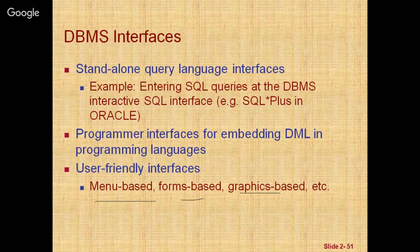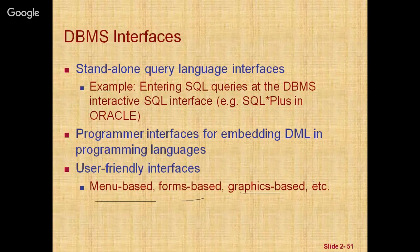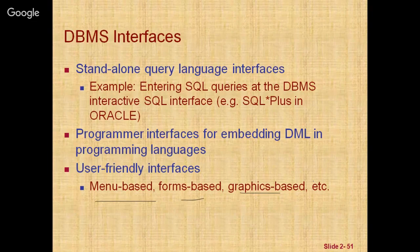Interfaces for parametric users — such as bank clerks — provide a small set of operations that must be performed repeatedly. System analysts and programmers design and implement a special interface for each known class of these users, since in a bank different types of users have different tasks, each with its own interface. There are also interfaces for the database administrator, who uses system-oriented privilege commands accessible only to the DBA.